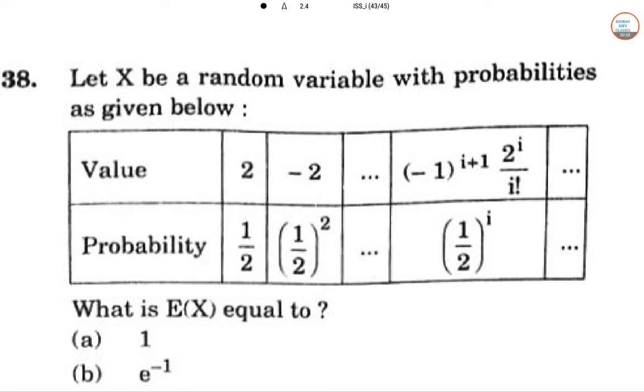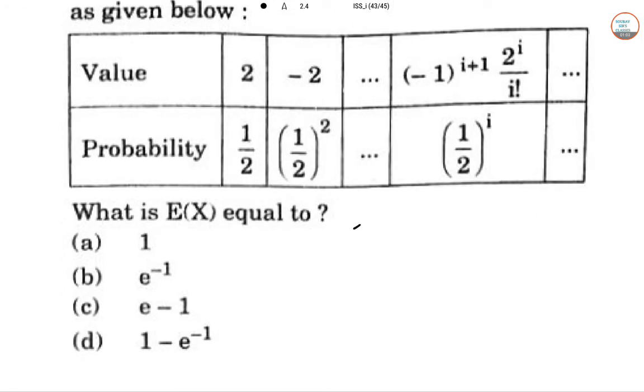Let X be a random variable with probabilities given as follows. What is expectation of X? Expectation of X is summation of x into probability of xi. So summation of half to the power i times minus 1 to the power i plus 1, 2 to the power i over i factorial.